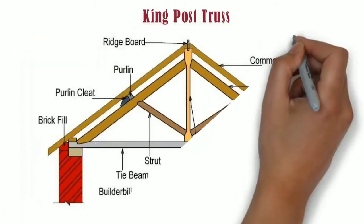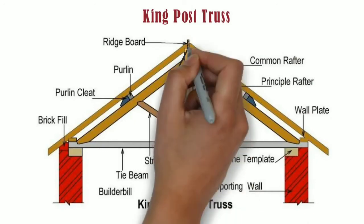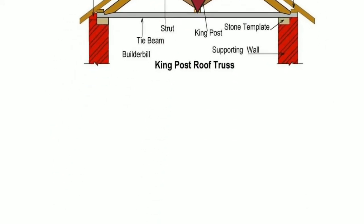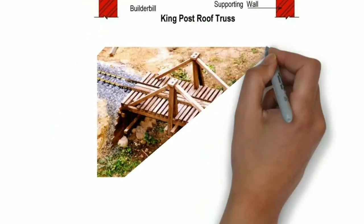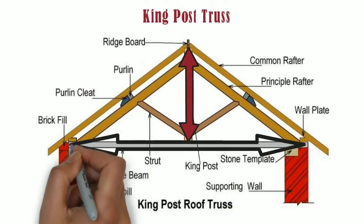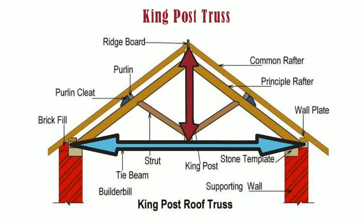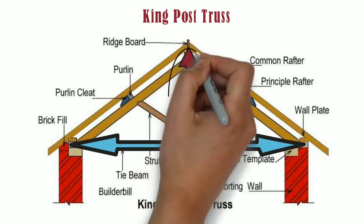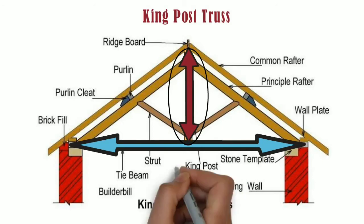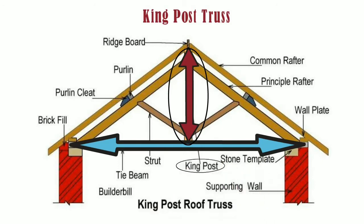A king post truss contains a central vertical post that is utilized in architectural or bridge designs dealing with tension to support a beam underneath from a truss apex above. In case of king post truss, a single vertical post extends from top to bottom, which is called as king post.